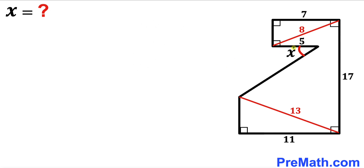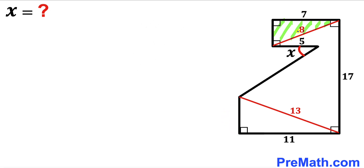In order to calculate this angle x, we must calculate this vertical side length and likewise this vertical side length of this given shape as well. Now let's focus on this right triangle over here whose side lengths are 7 and 8, and we are interested in calculating this unknown side length.